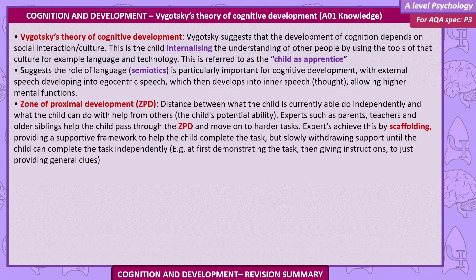Vygotsky suggests the role of language (semiotics) is particularly important for cognitive development, with external speech developing into egocentric speech, which then develops into inner speech, allowing higher mental functions. The zone of proximal development (ZPD) is the distance between what the child is currently able to do independently and what the child can do with the help of others — the child's potential ability.